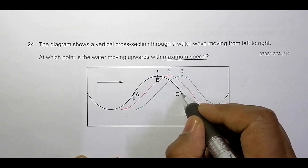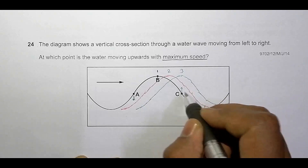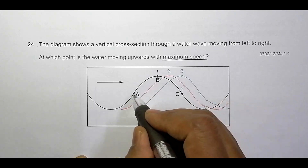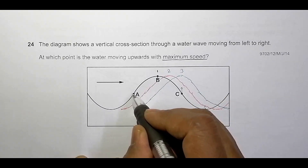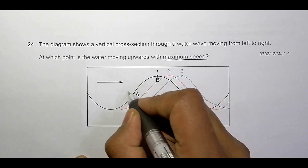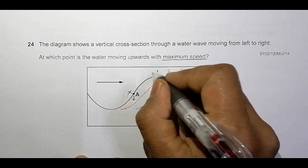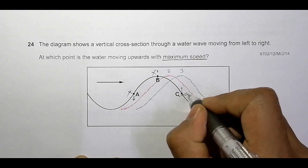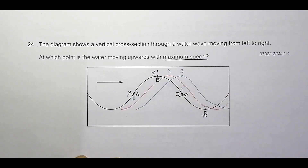So choice number C should be the correct answer. It is moving upward and has maximum speed as well. In the case of A, it has maximum speed also, but it is moving downward, so it disqualifies. Choice B and D also disqualify. Only C is the correct answer.